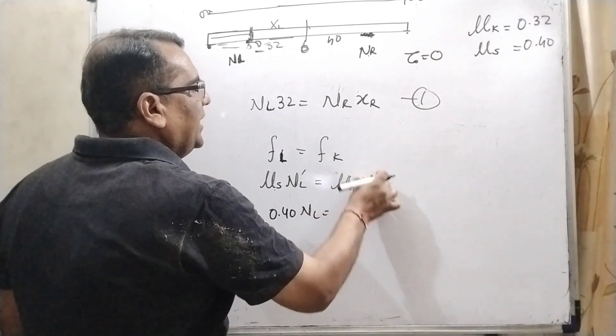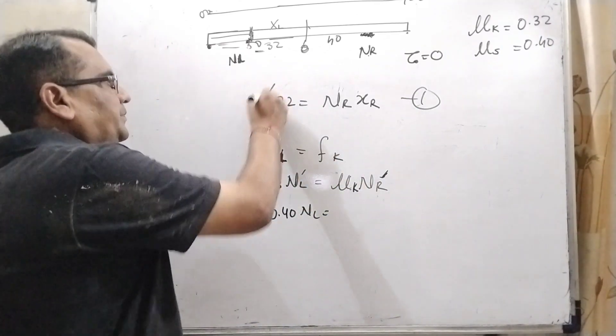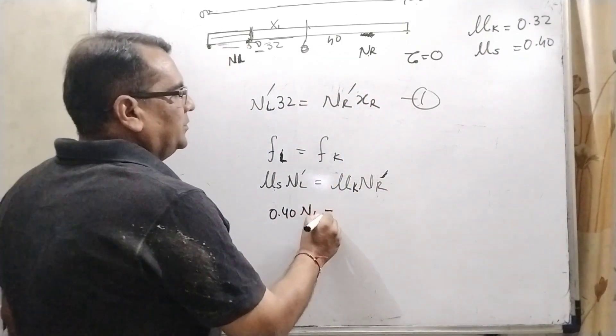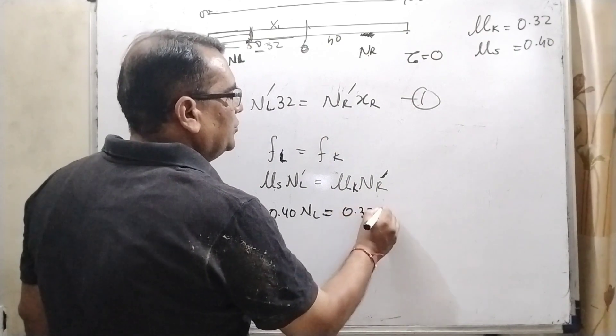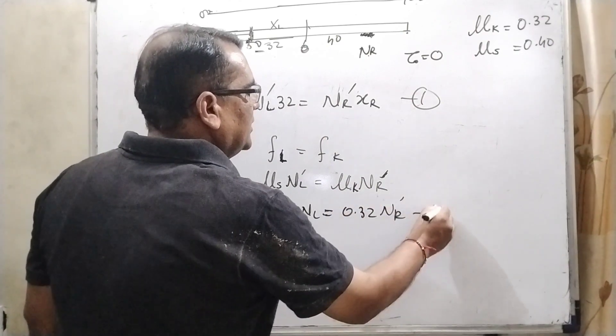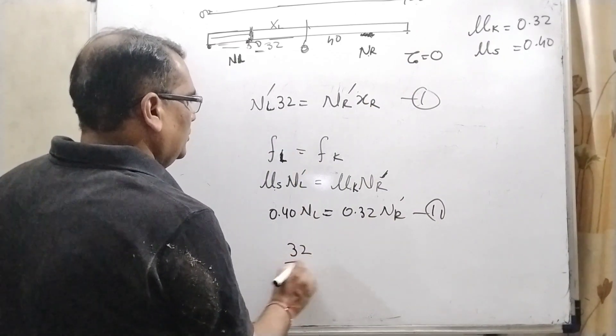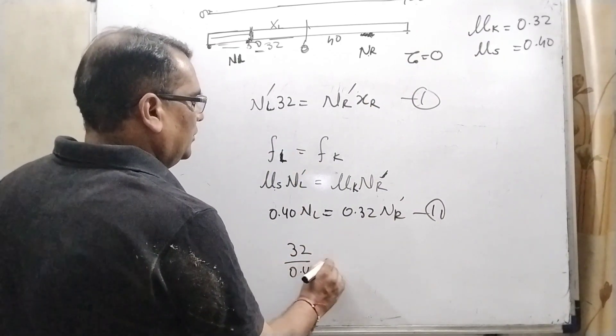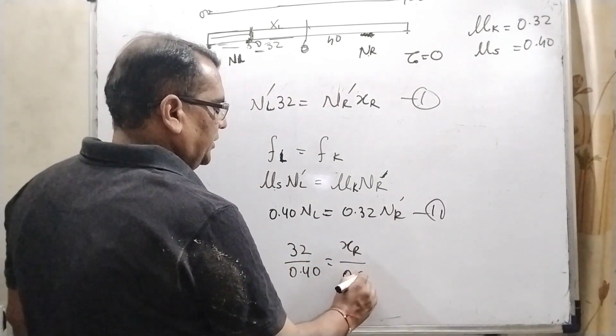Now μK × NL', NL cancels. 32 upon 0.40 = XR upon 0.32.